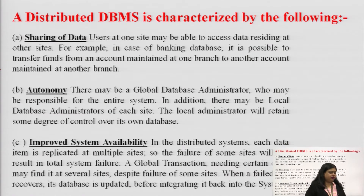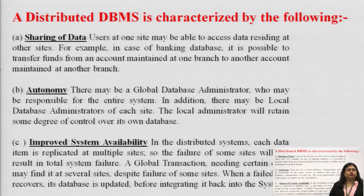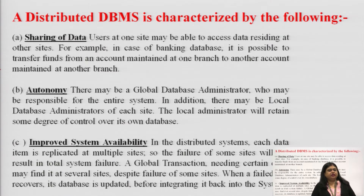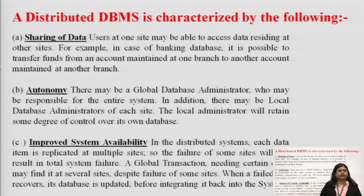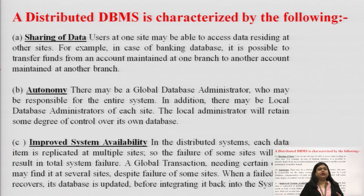Now, what are the characteristics of a distributed database system? The first characteristic is sharing of data. Users at one site may be able to access data residing at another site. For example, in case of a banking database, it is possible to transfer funds from one account maintained by one branch to another account maintained by another branch.